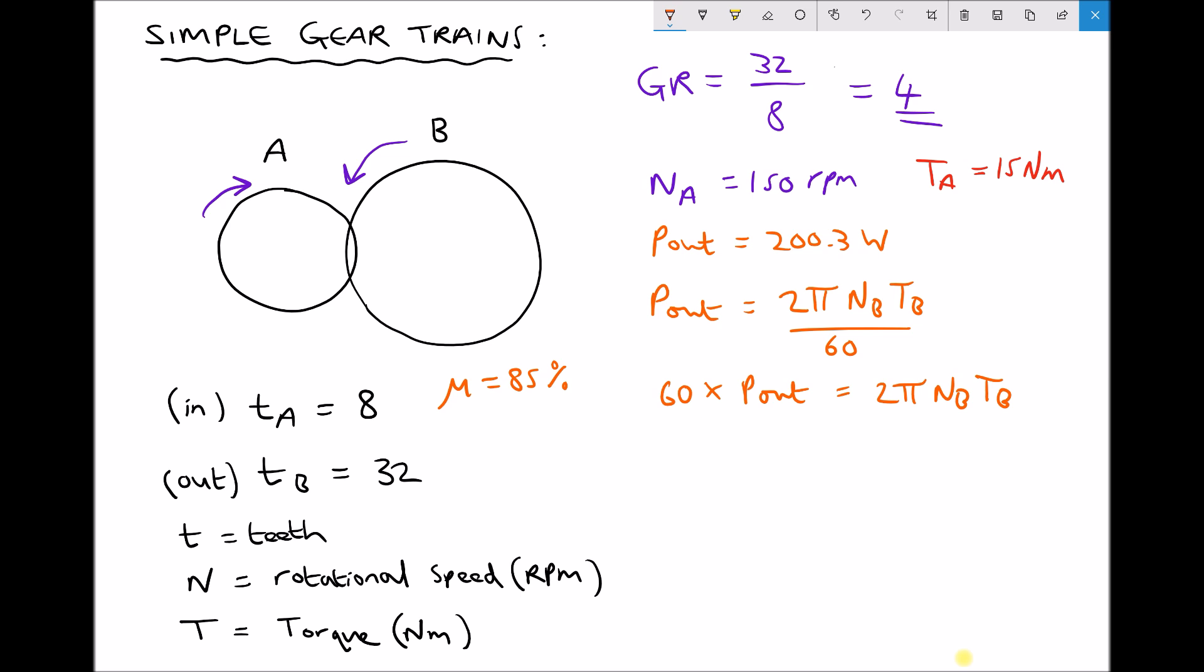Again, although it looks complex, what we can do is treat this as a block because 2π is just a number, n b is just a number. So where I put those brackets round, all we have is a number or a quantity.